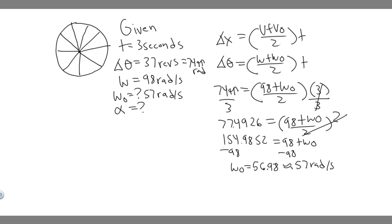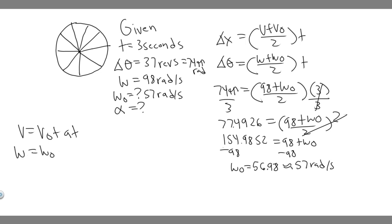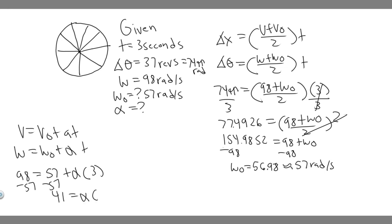Now we can solve for alpha. The equation we'll use is V equals V-sub-zero plus A times T, or in rotational form: omega equals omega zero plus alpha times T. Plugging in: 98 equals 57 plus alpha times 3. Subtracting 57 from both sides gives 41 equals alpha times 3. Dividing both sides by 3: 41 divided by 3.